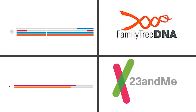Here are some chromosome browsers showing the X chromosome from Family Tree DNA and 23andMe. This chromosome browser shows five siblings — one sibling is the background person shown in gray, and then there are two sisters and two brothers who took DNA tests. The two sisters share full X chromosomes with their sister, while the two brothers had recombined X chromosomes from their mother.